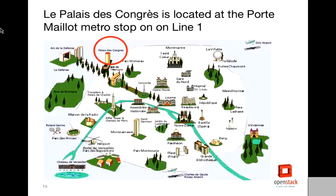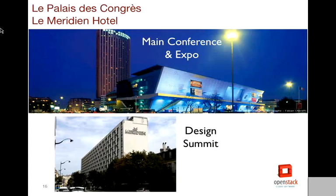The summit will be held at the Palais de Congrès, located near the Porte Maillot Metro stop. It's pretty central — near the Arc de Triomphe — and easy to access from the Metro. Definitely recommend getting some Metro passes for that week. The main conference will be at the Palais, and across the street at Le Méridien Hotel is where we'll do the design summit sessions. They'll be separated across the street, but everyone will have lunch together over at the Palais.